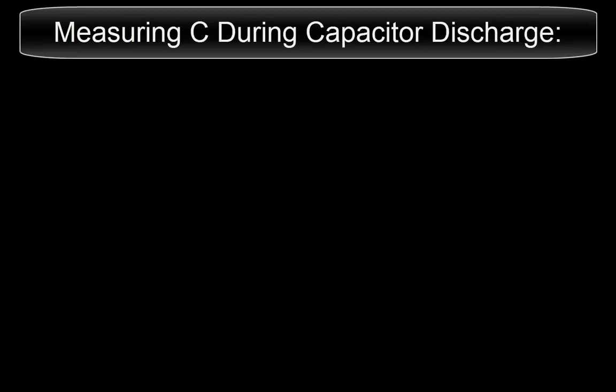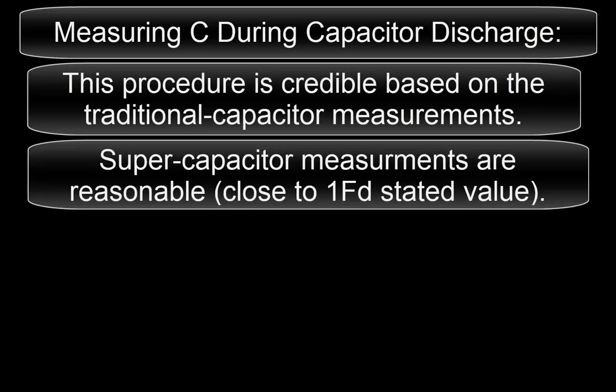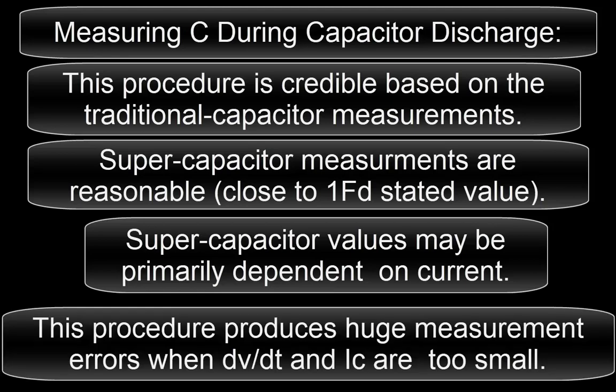Measuring C during capacitor discharge. This procedure is credible based on the traditional capacitor measurements. Supercapacitor measurements are reasonable because they are close to the 1 farad stated value. Supercapacitor values may be primarily dependent on current. This procedure produces huge measurement errors when dVDT and IC are too small.